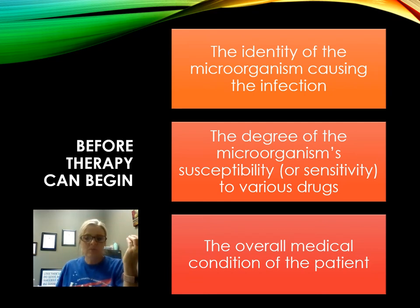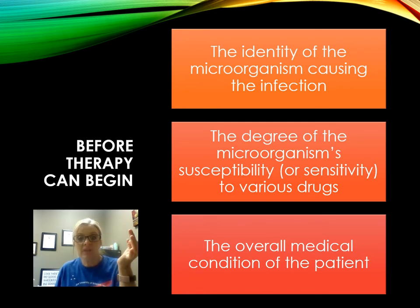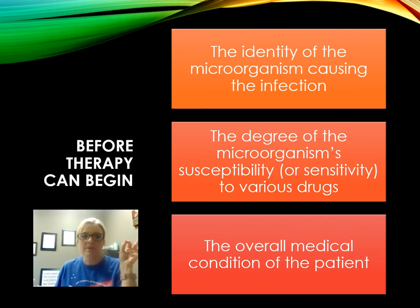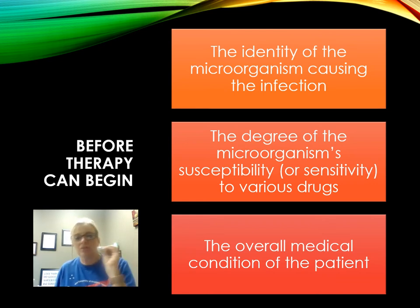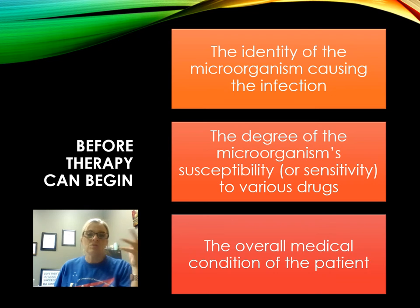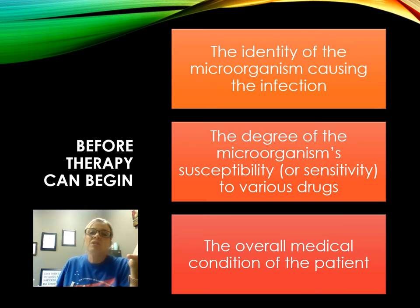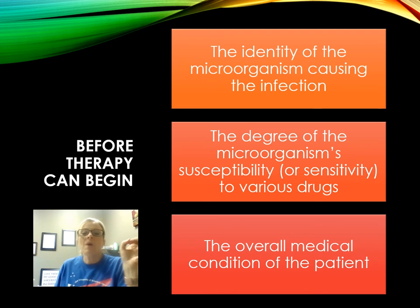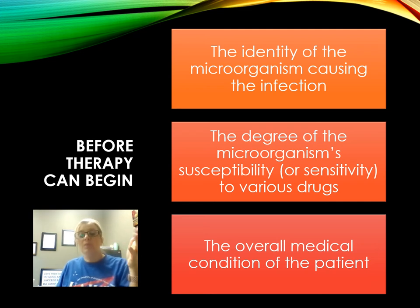Doctors often begin therapy on the basis of immediate findings and informed guesses, because it can take several days for cultures to grow. For example, if a sore throat appears to be caused by Strep, they may prescribe a broad-spectrum antibiotic like penicillin until testing is done, then change it if needed. Epidemiological statistics can also help guide treatment decisions.